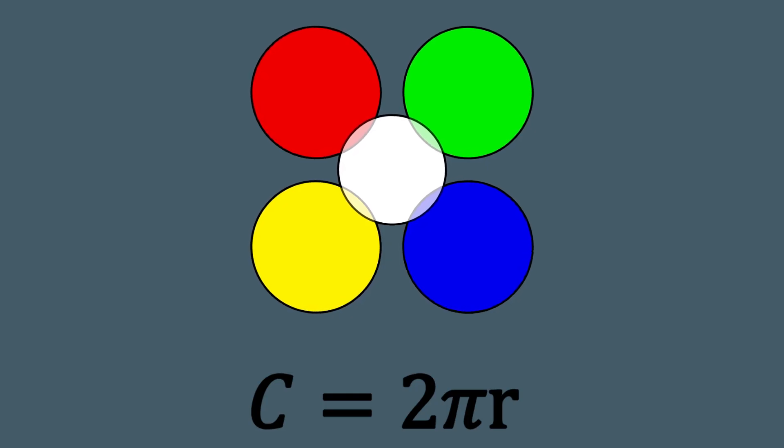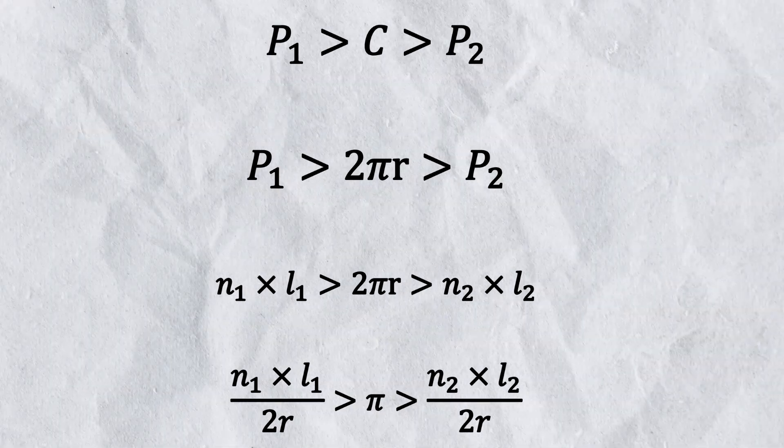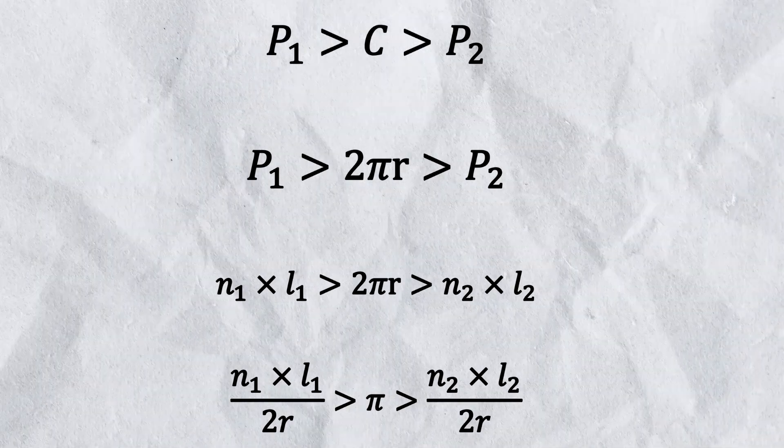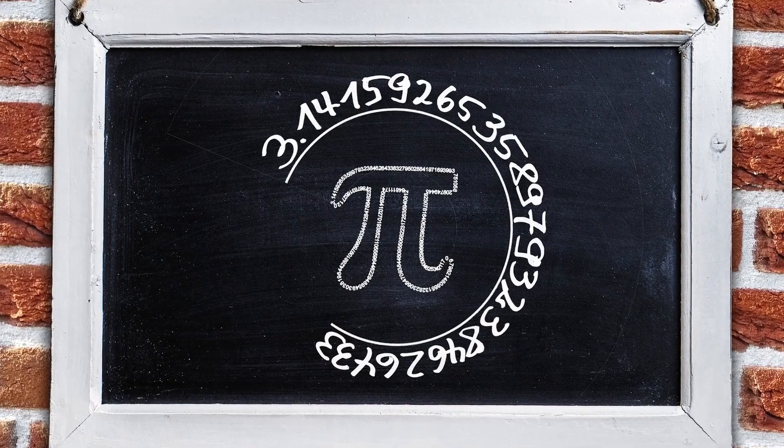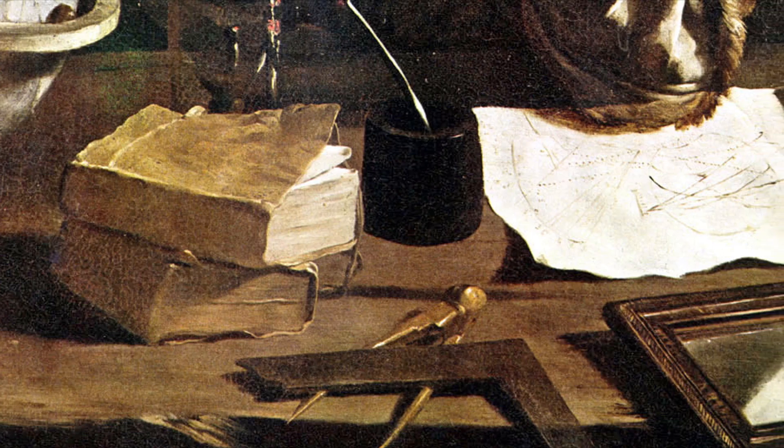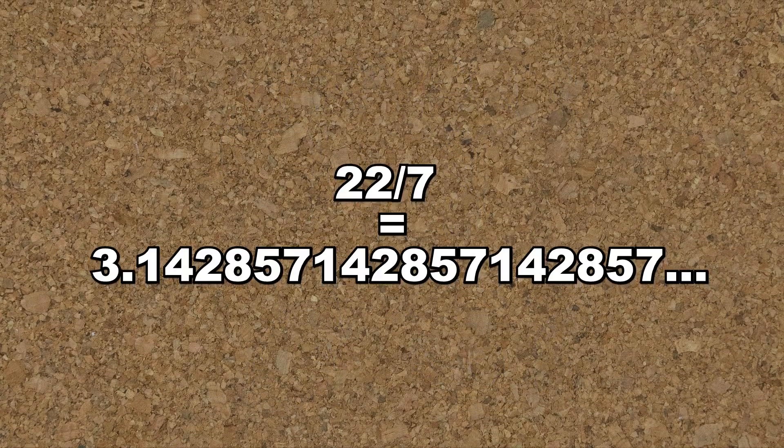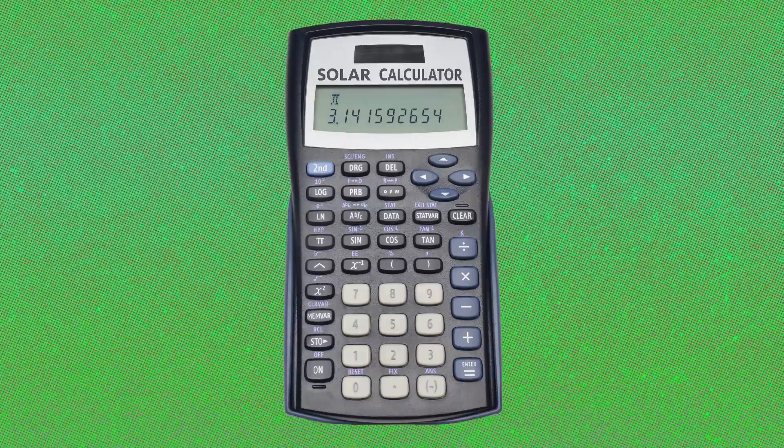Since the circumference of the circle is 2π multiplied by the radius, dividing the perimeters of the polygons by the diameter of the circle gave an approximation of pi. And for a 96-sided polygon, Archimedes calculated that pi was roughly 22 sevenths, which is really close to its real value.